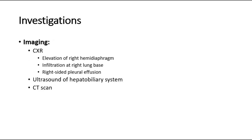For imaging, an erect chest X-ray in the anterior-posterior view can be done to look for any elevation of the right hemidiaphragm, infiltration at the right lung base, and any right-sided pleural effusion — all on the right side, near the liver.